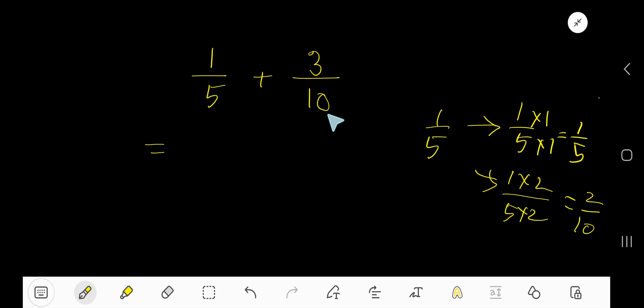Because here in this fraction the denominator is 10, right? So from here also you can get the same denominator, just multiply both numbers by 2. Now since you have got the same denominator, so just add the numerators.